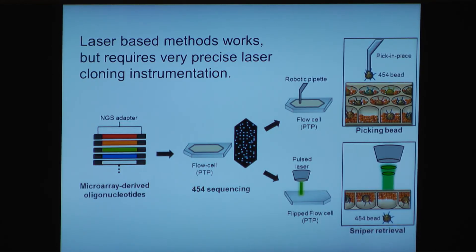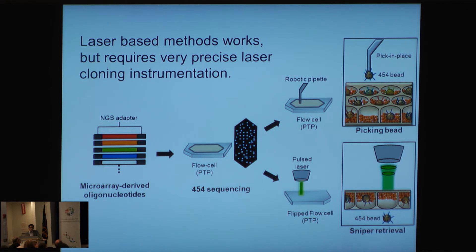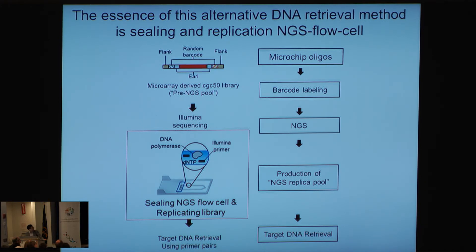Briefly, I'd like to introduce an alternative strategy for making error-free oligonucleotides. The laser-based method works but requires very precise laser cloning instrumentation, so we wanted to develop another technology. The essence of the alternative DNA retrieval method is: after NGS sequencing on an Illumina flow cell, we seal the NGS flow cell, inject PCR amplification reagent, seal it, and then replicate the entire library to collect the sequences we want.